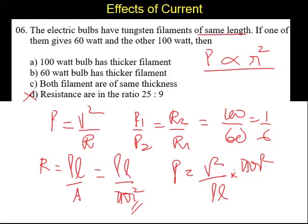So higher the power, higher will be the thickness. So the 100 watt bulb will have more thickness than 60 watt bulbs because power is directly depends upon thickness. So we can say 100 watt bulb as a thicker filament. Correct choice is A because power is directly equal to square of the radius of the filament.